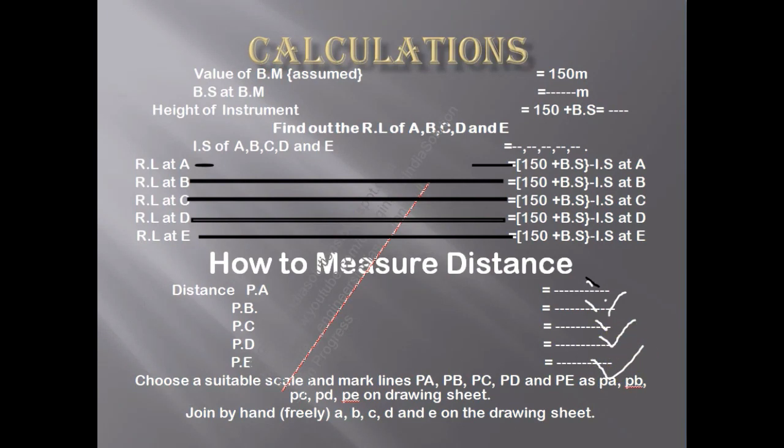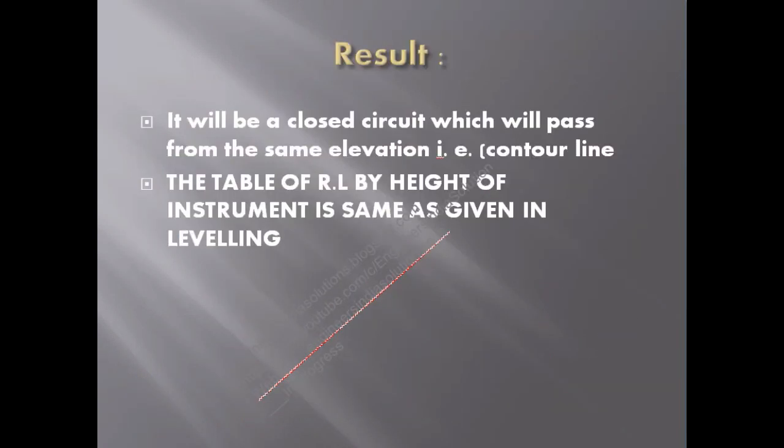Finally we have the result. It will be a closed circuit and we will be joining the lines of the same elevation. The plane table points of RL of same height will be given, and the formation of the contour will be done.